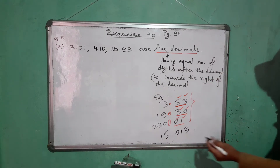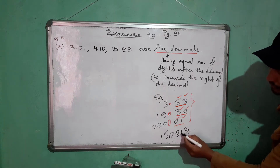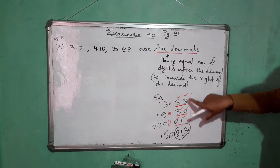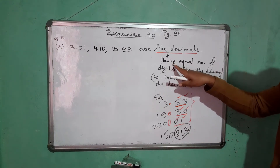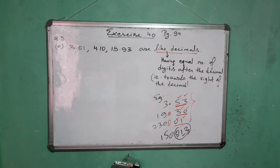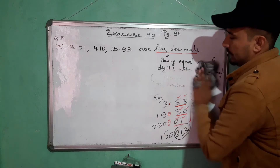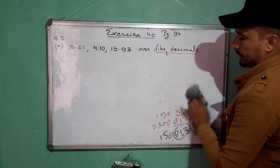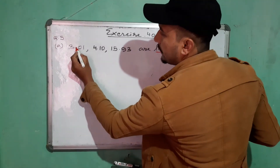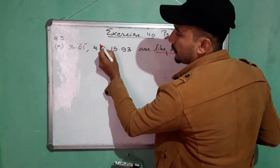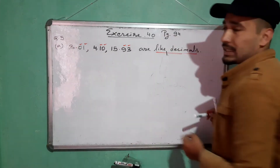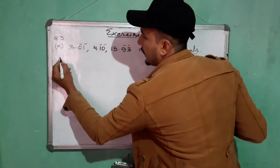If there is a number like 15.013, it has three digits after the decimal — 0, 1, and 3 — so it is not a like decimal compared to the above three. Keep a proper note: like decimal means decimal numbers having an equal number of digits after the decimal. Now for question 5(a): after each decimal in 3.01, 4.10, and 15.93 you have two digits — so all three have equal digits after the decimal. Hence it is a like decimal. Answer: True.